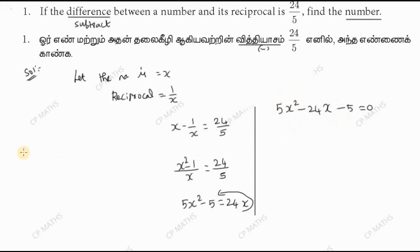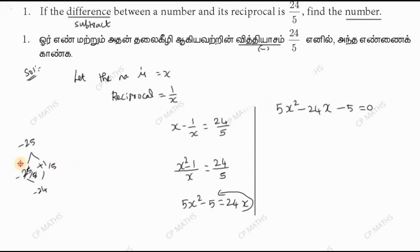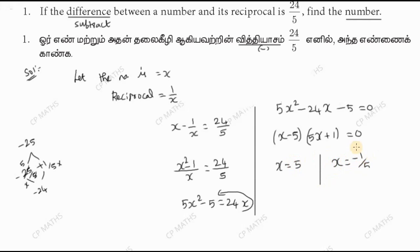Factorize: 5 into 5 equals 25. So minus 25 and plus 1 give minus 24. We get the factors: 5x times x minus 5, and 5x plus 1 equals 0. Therefore x equals 5 or x equals minus 1 by 5. The number is 5 and minus 1 by 5.